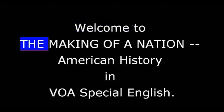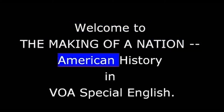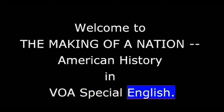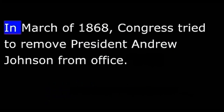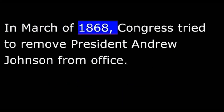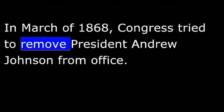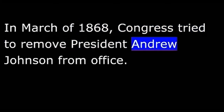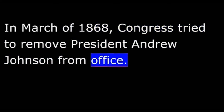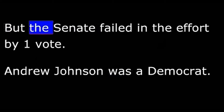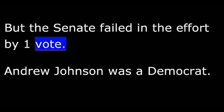Welcome to The Making of a Nation, American History in VOA Special English. In March of 1868, Congress tried to remove President Andrew Johnson from office. But the Senate failed in the effort by one vote.